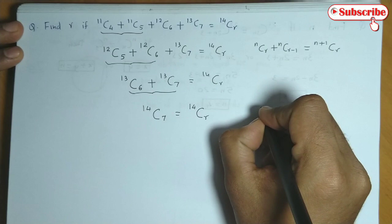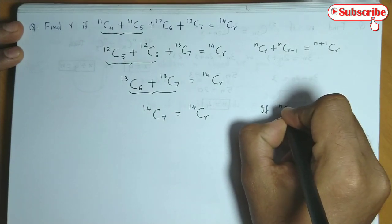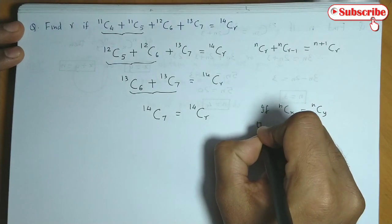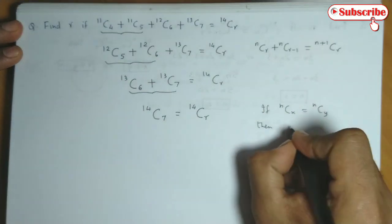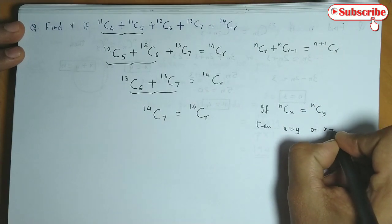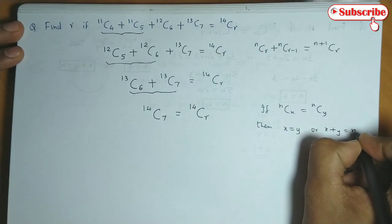Now if you remember we have this property: if NCx is equal to NCy, then there are two possibilities. X equals Y, or X plus Y equals N.